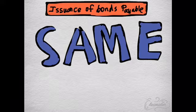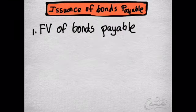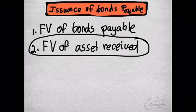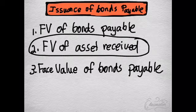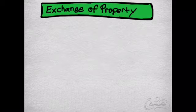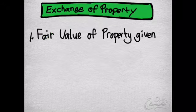Sometimes a company may also issue bonds payable, and it is the same method as the issuance of share capital but with different priorities. The first priority would be fair value of bonds payable, second is fair value of the asset received — which was the first priority for issuance of share capital — and the last one would be face value of bonds payable.